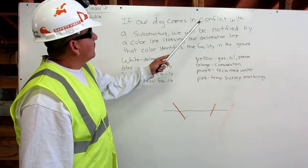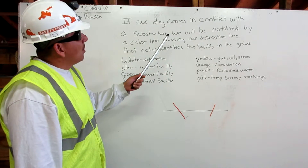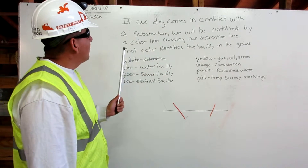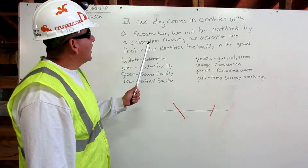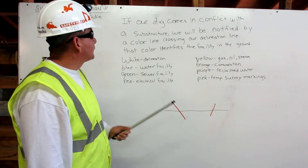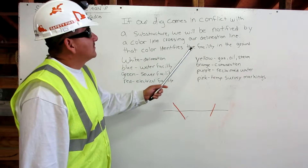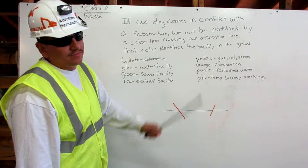If our dig comes in conflict with a substructure, we will be notified by a colored line crossing our delineation line. That color identifies the facility in the ground.